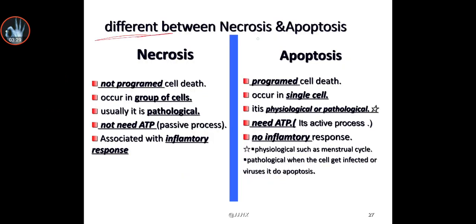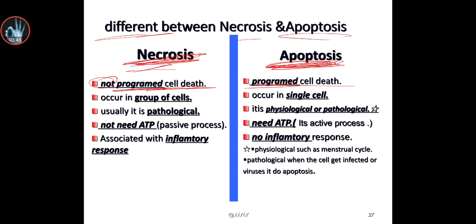So the difference between necrosis and apoptosis: necrosis is not programmed cell death, but apoptosis is programmed cell death. Necrosis occurs in a group of cells, whereas apoptosis occurs in a single cell. Necrosis is always caused by a pathological cause, but apoptosis can be either pathological or physiological.